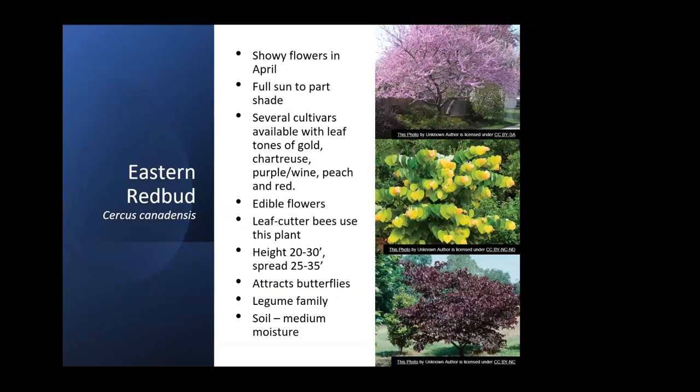Eastern redbud is blooming everywhere right now, and you have a wide variety of cultivars to choose from: Rising Sun, Purple Forest Pansy, there's a gold one, and one that's got red in it that's pretty cool. These are neat trees that grow easily. I did have a Rising Sun that got killed by ambrosia beetle last year, so every once in a while they run into a problem. The leaf cutter bees really like them — they'll cut circles out of the leaves and use them.